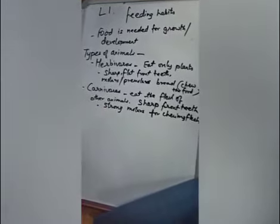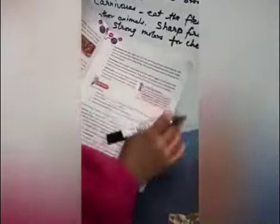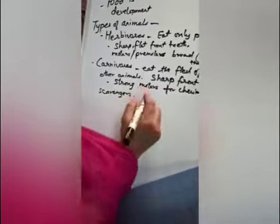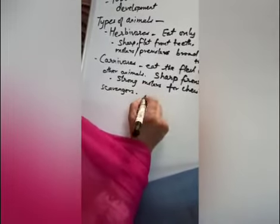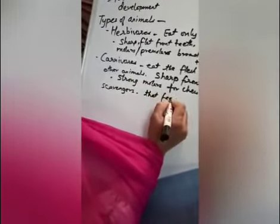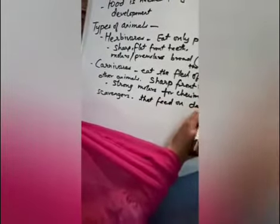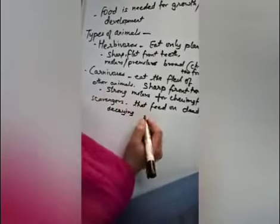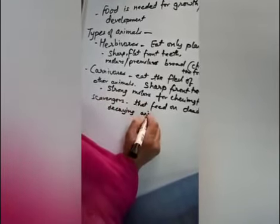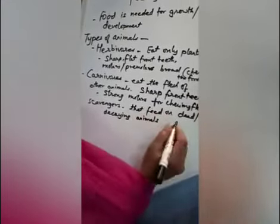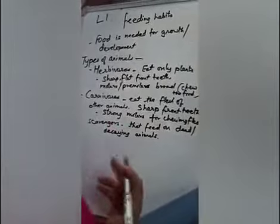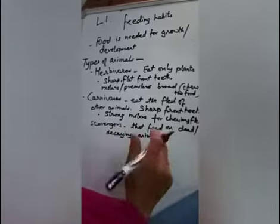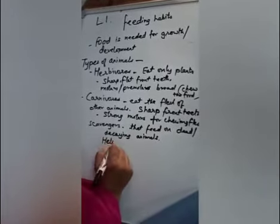In the carnivores, there is one another category of animals called scavengers. Scavengers are the ones that feed on dead and decaying animals — those animals which have died and started decomposing, their body has started breaking up in the forest. They feed on those particular animals and they help in keeping the forest clean.